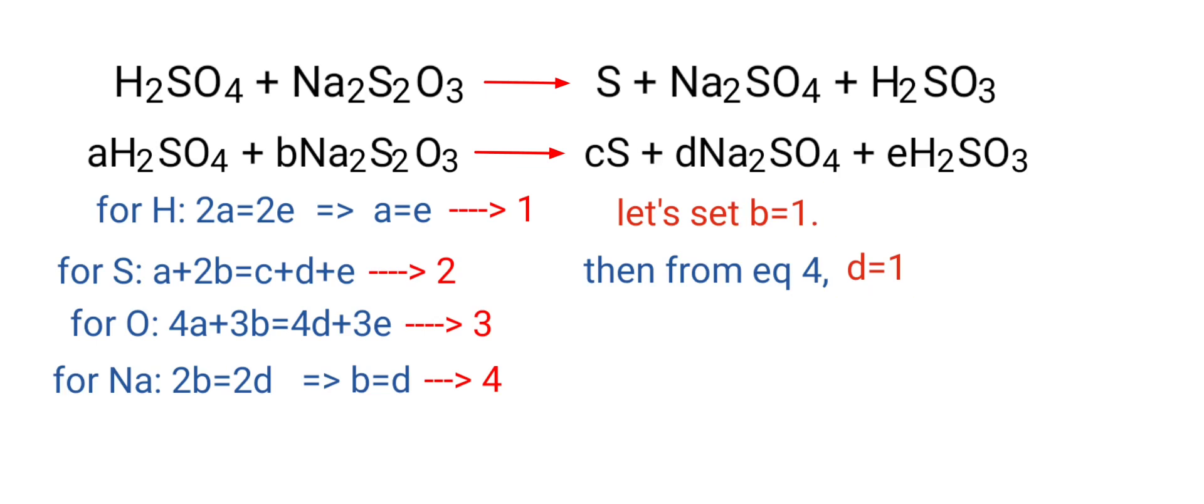Now apply the B and D values in equation 3. Then 4A plus 3 equals 4 plus 3E, so 4A minus 3E equals 1. From equation 1, A equals E, so 4E minus 3E equals 1. Therefore E equals 1, and from equation 1, A equals 1.